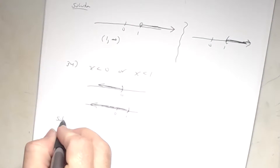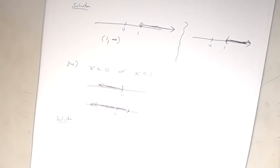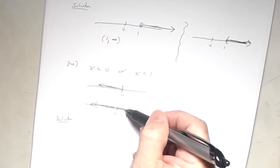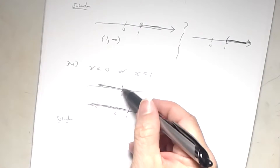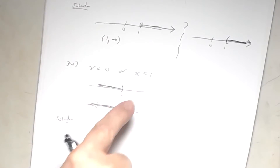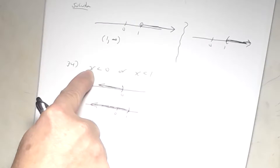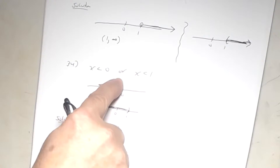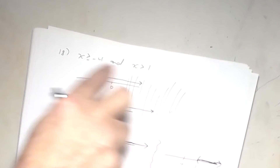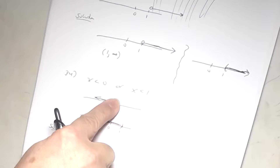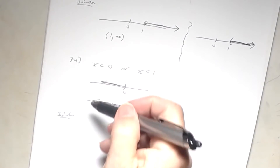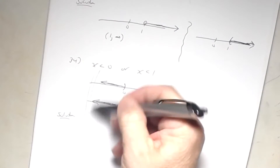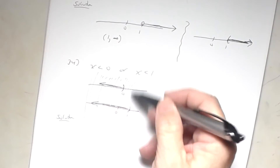This is an 'or' statement, so anything shaded is a solution. Take 1/2 as an example: is 1/2 < 0? No. But is 1/2 < 1? Yes — so it's a solution because it satisfies one of them. Your final solution is everything shaded up to 1, so the graph is an open circle at 1 going to the left.